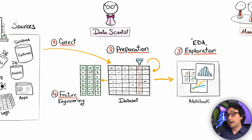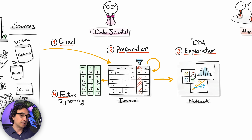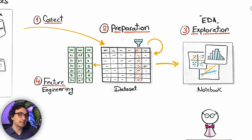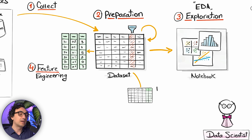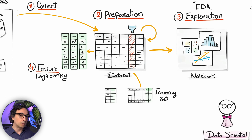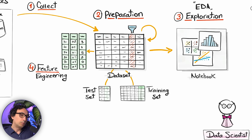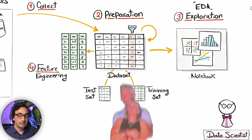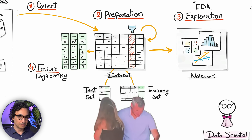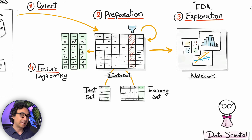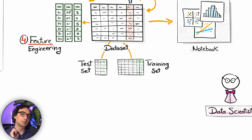Now it's machine learning time. First, we split our dataset into two sets: the training set, where our model learns from the data, and a smaller test set, which we use to evaluate the model's performance. If you train and test on the same dataset, you're basically cheating — so we always split them.